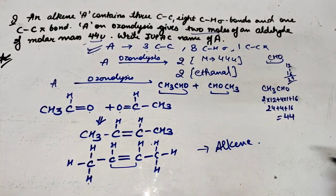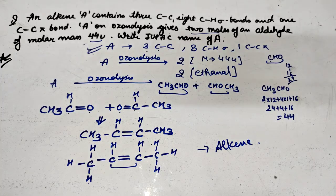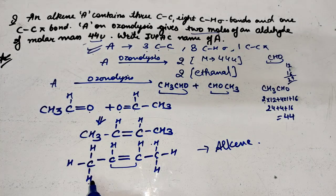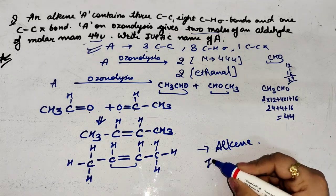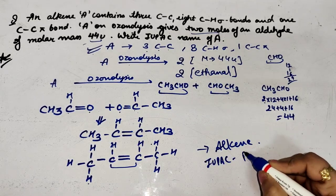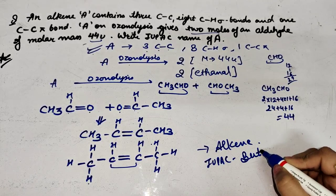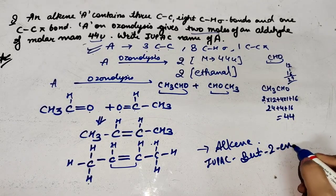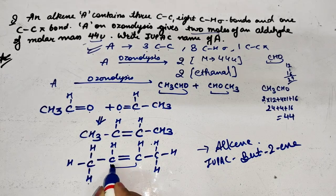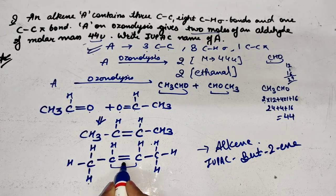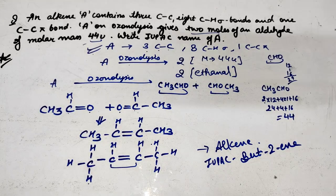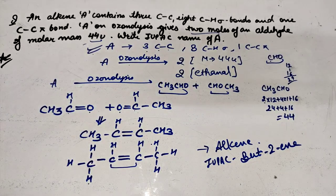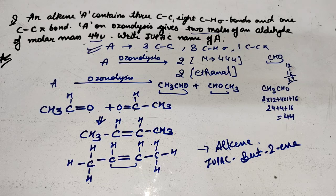So this is the alkene formed. Now what do we need to do? IUPAC name. What will be the IUPAC name? Can you tell? Look, how many carbons: 1, 2, 3, 4. So the IUPAC name will be but-2-ene. Because the double bond is present on the second carbon, so but-2-ene. We've found the alkene and written its IUPAC name, so the question is complete.